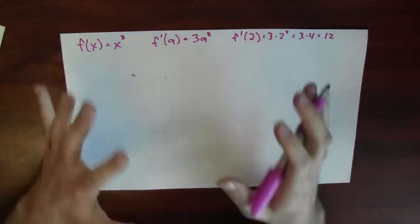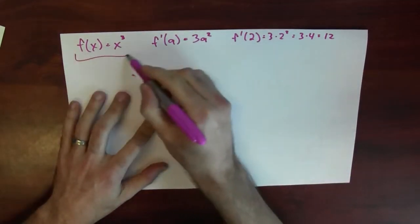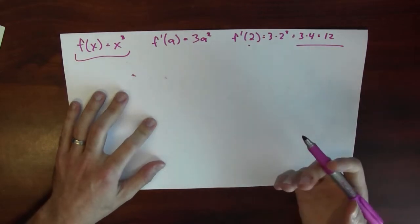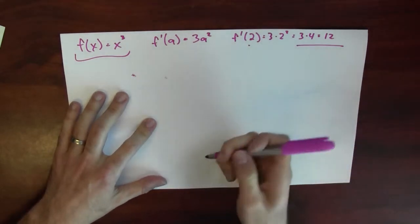But what does that really mean? What does it mean to say that the derivative of this function at 2 is 12? I'll try to get some sense of what that might mean. Let me draw a picture.